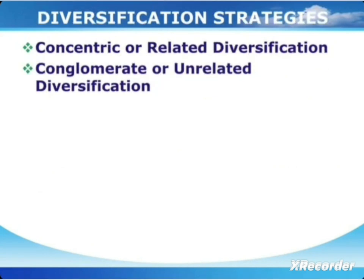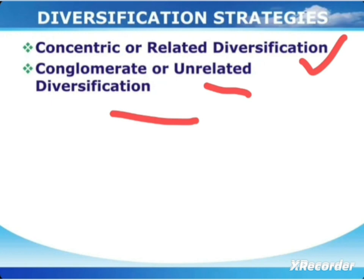The next strategy is diversification. As discussed in the Ansoff model, diversification involves a new product going into a new market. Diversification is of two types: concentric (related) diversification and conglomerate (unrelated) diversification. If a company in food processing starts a new related product, it is related diversification. If a food company starts a mining industry, it is unrelated diversification.